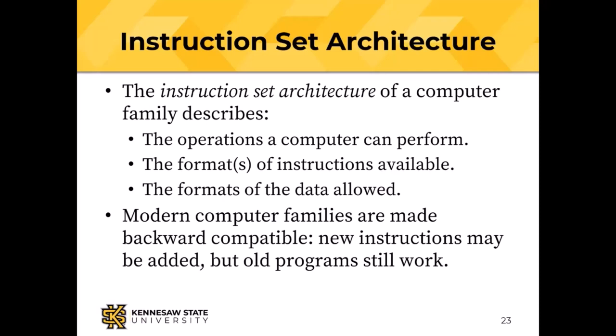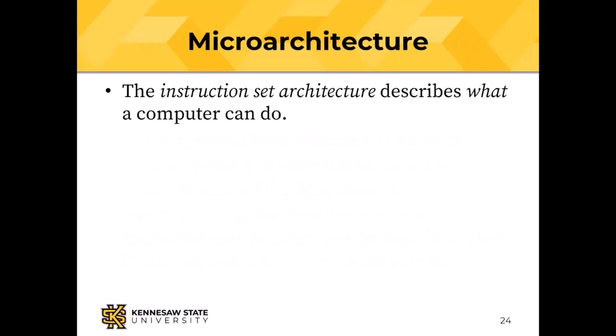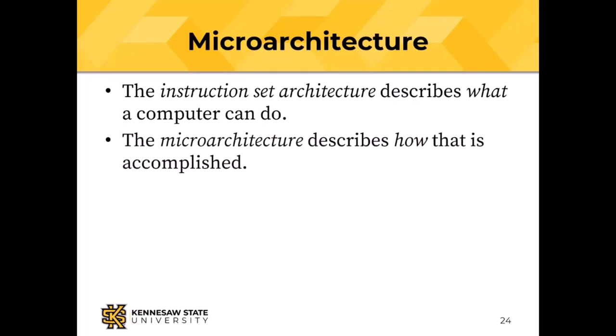The instruction set architecture describes the operations a computer can perform and the formats of data and instructions. The micro-architecture is different — it's the implementation. The instruction set architecture describes what a computer can do; the micro-architecture describes how that's accomplished.